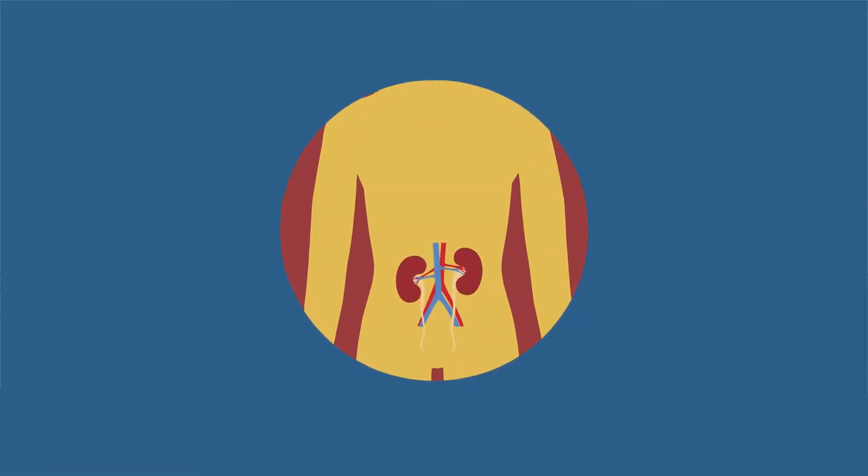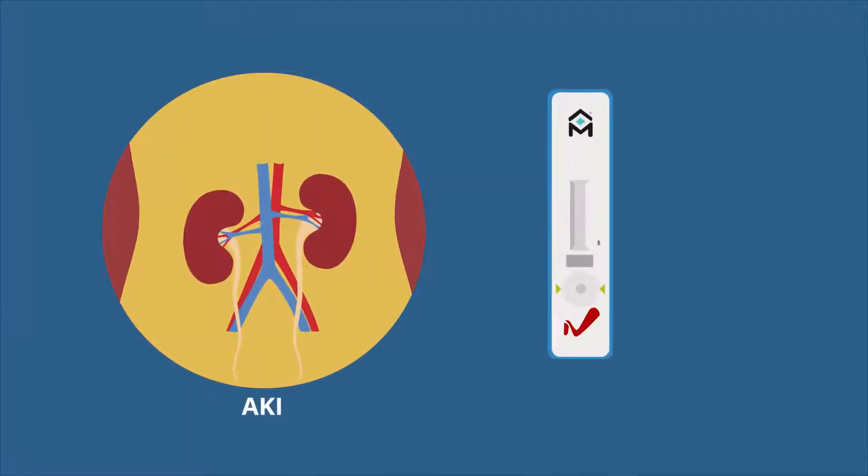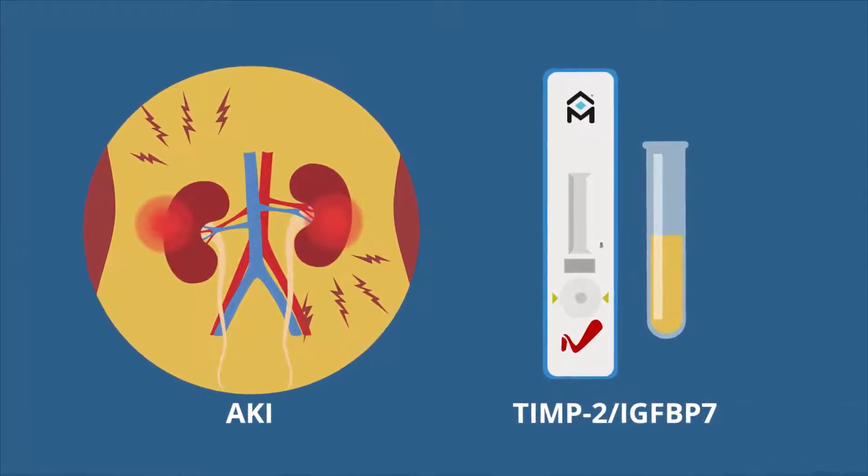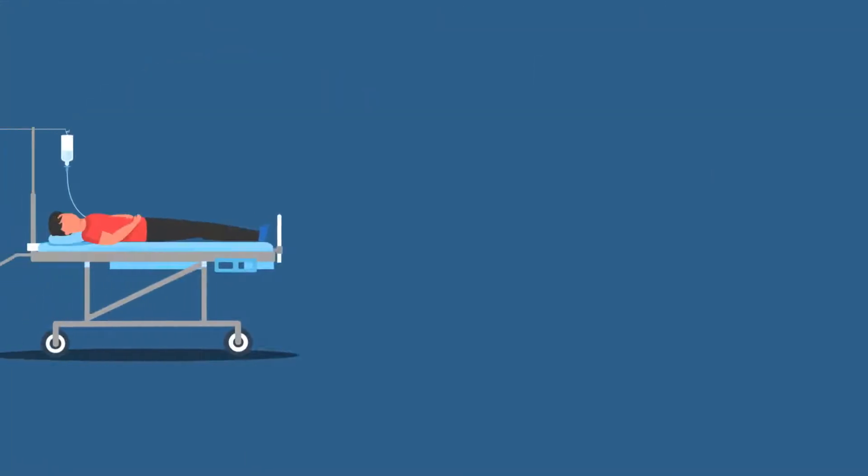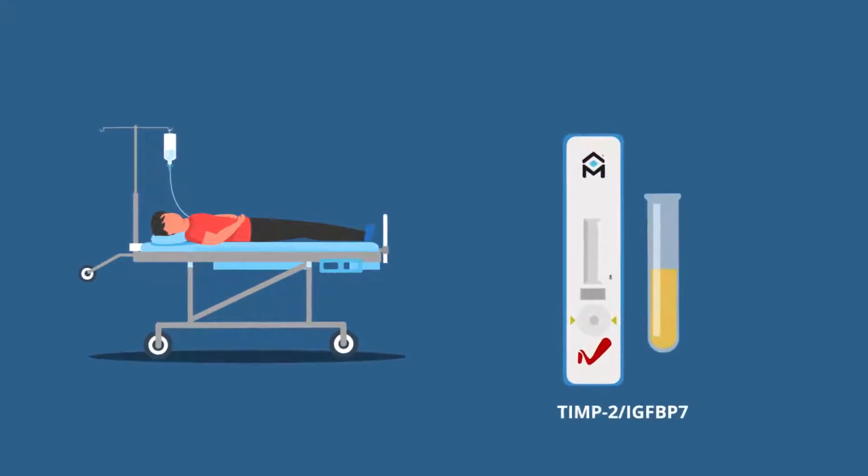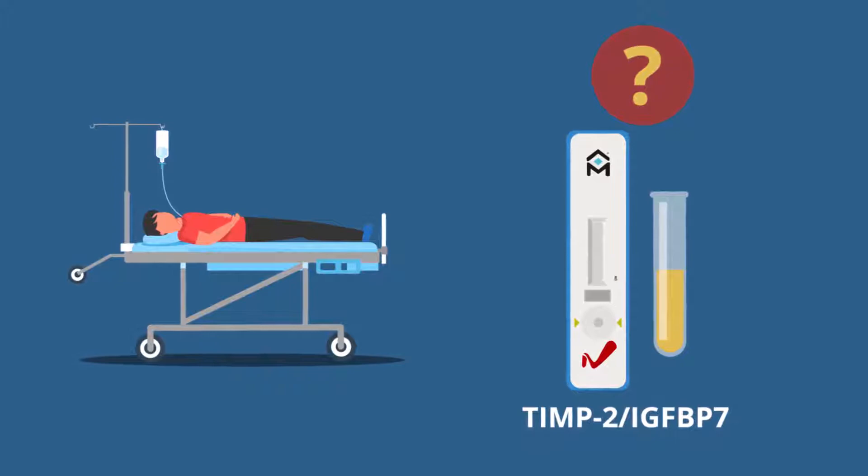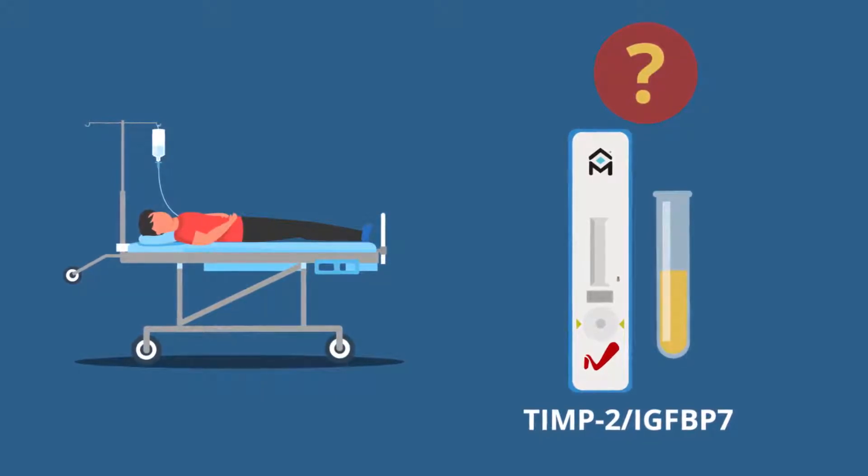Fortunately, AKI can be detected with a test called NefroCheck, which assesses a USA FDA-approved AKI biomarker in urine called TIMP2 IGF-BP7. But the test's effectiveness in detecting AKI is not yet known in patients with critical illnesses admitted to the emergency department, or ED.